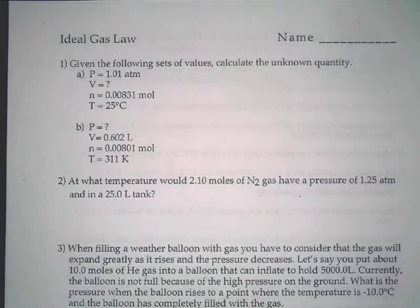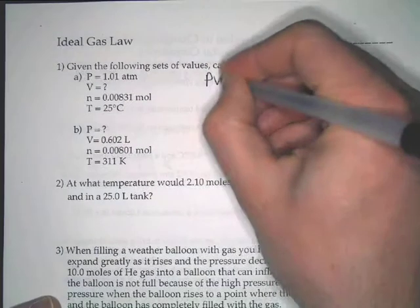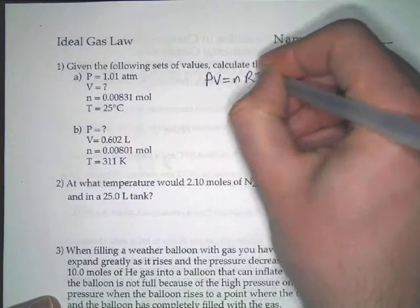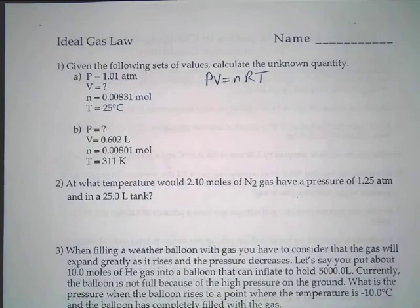So let's look at this one. Given the following sets of values, calculate the unknown quantities. So if you look here, these questions were laid out extremely, extremely easily, the first two, like the variables are even labeled for you. So all you've got to do here, you see we're using PV is equal to NRT. Obviously, which variable is not given? V.